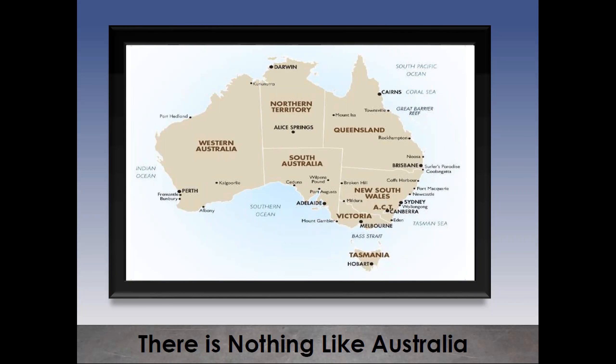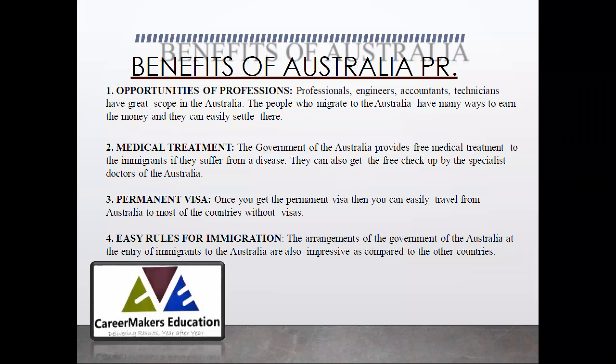If you look at the map of Australia carefully, you will find out that there are eight states and union territories in Australia, and each and every state has got its own labor requirements and occupation list. So depending upon the availability of occupations and skills in each one of these states, you can migrate to any part of Australia.